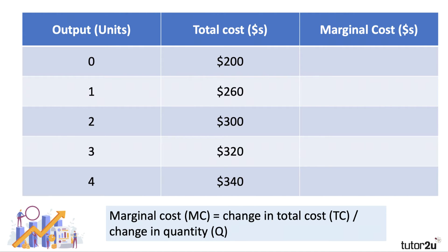We're concerned with marginal cost in this video. The first unit adds $60 to cost, the second unit adds $40, the third unit adds $20, and so too the fourth unit — it adds $20 to cost. That's what we mean by the marginal cost of production: the change in total cost divided by the change in output, which in this case is a one unit change.